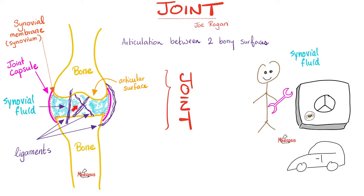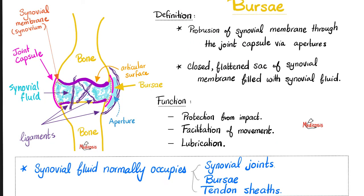Ask any patient who suffers from synovitis — very stiff. That's why patients with rheumatoid arthritis, systemic lupus erythematosus, or psoriatic arthritis all complain of stiffness. Sometimes a part of the synovial membrane will protrude through an opening — this is called a bursa. It's a protrusion of the synovial membrane through the joint capsule via an aperture. Bursae can protect from impact, facilitate movement, and provide lubrication. Synovial fluid is found in the synovial joint cavity, in bursae, and sometimes in tendon sheaths.